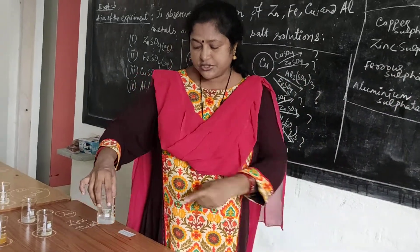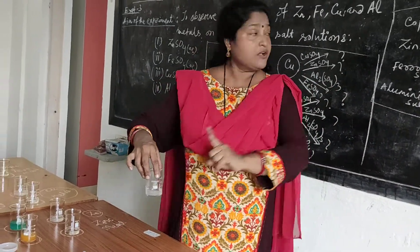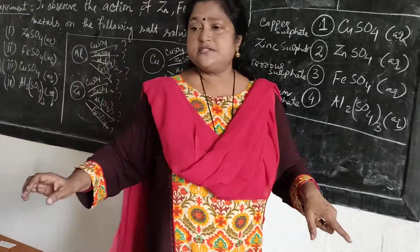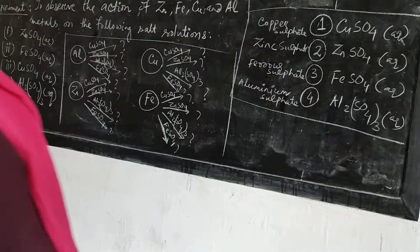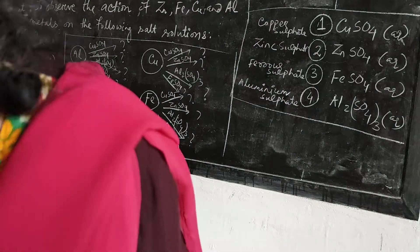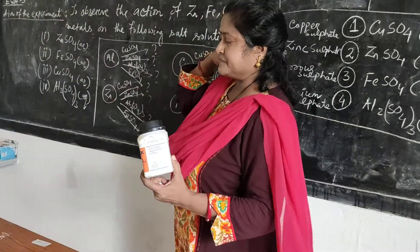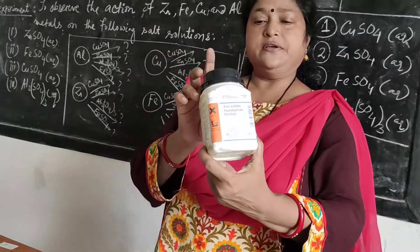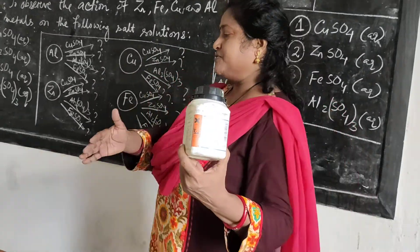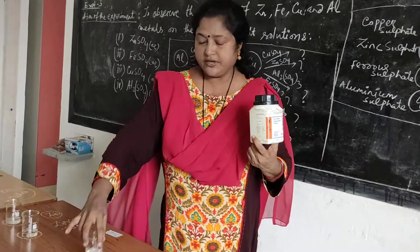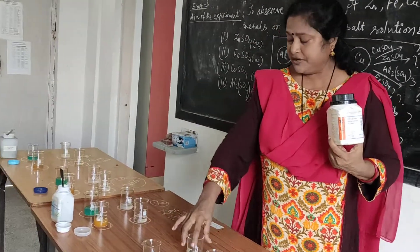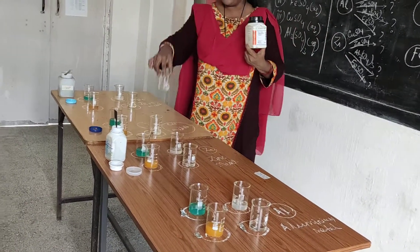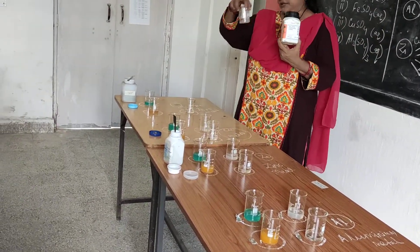Then beaker 2 — position 2. Beaker 2 is zinc sulfate solution. This is my zinc sulfate. I have taken zinc sulfate solution — zinc sulfate solution in water.